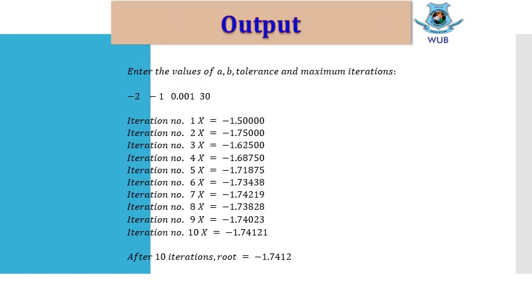There you can see the output for some values like a = -2, b = -1, and the tolerance is 0.001. The maximum iteration here I have given is 30. You may change the maximum iterations values to 40, 50, or less than 30. This is your desired result.